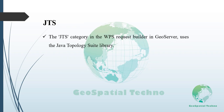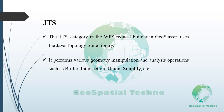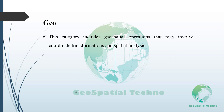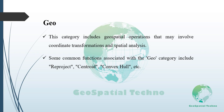The JTS category uses the Java Topology Suite library to perform various geometry manipulation and analysis operations such as buffer, intersection, union, simplify, and more. The GEO category includes geospatial operations that may involve coordinate transformations and spatial analysis. Some common functions include Reproject, Centroid, Convex Hull, and others.